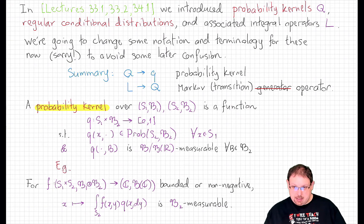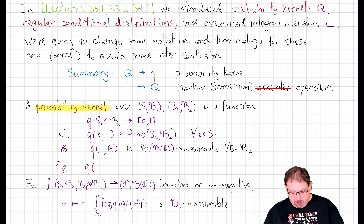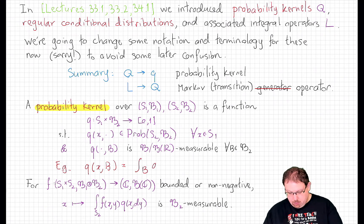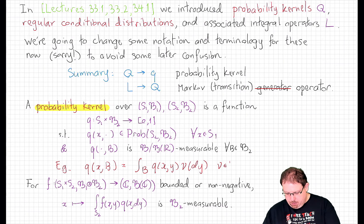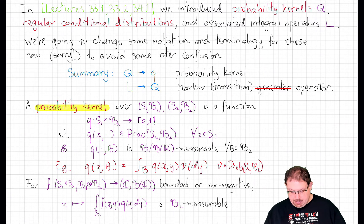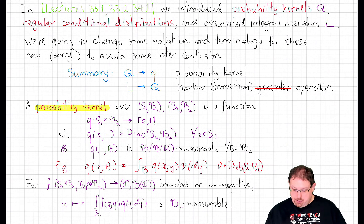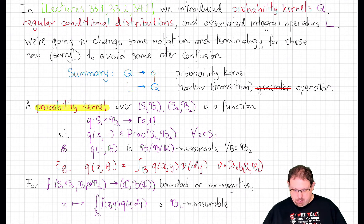A typical kind of example that will come up most of the time, at least in continuous time processes, is when the probability kernel Q of x and B takes the form of an integral over B of some function — also denoted lowercase q — of x and y, times nu of dy, where nu is some probability measure on the second state space. In that case, the condition is that this should be a probability density in y for each fixed x and a measurable function of both variables. More generally, Q of x dot may not have a density with respect to some measure, so we refer to it as Q of x and dy.